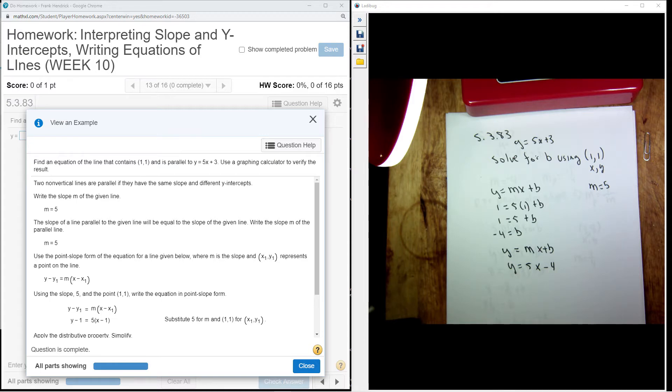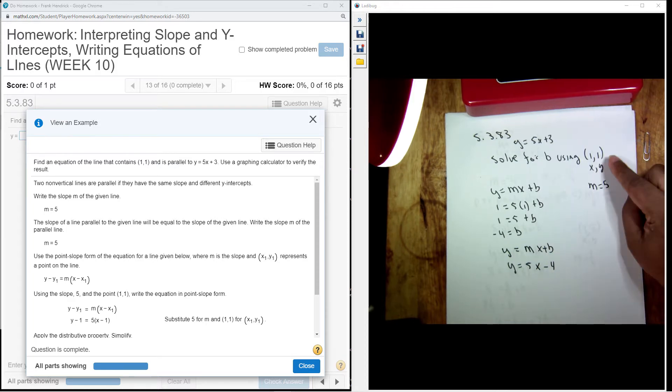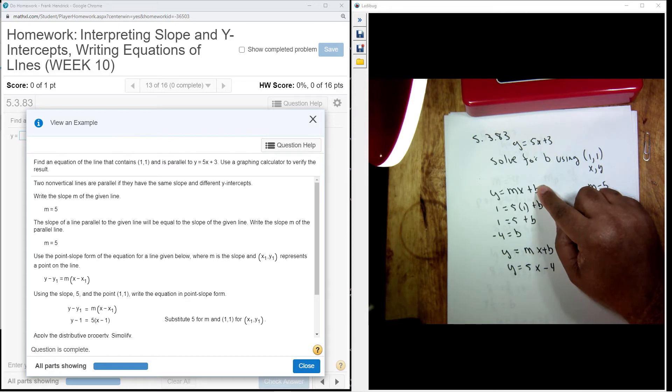So, we're given an equation here, and they want an equation. What we're going to do is solve for b using this equation here and using the point that they want us to use, 1, 1.